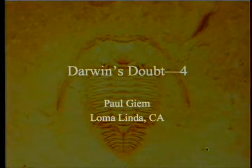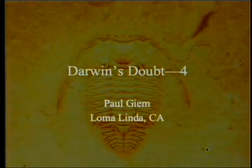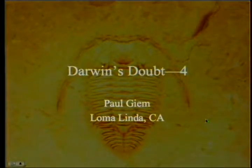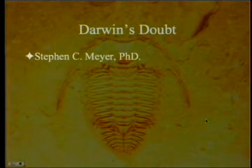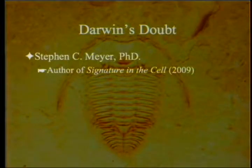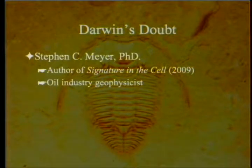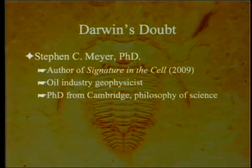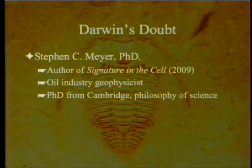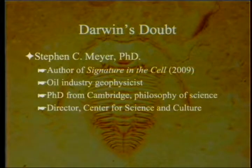Darwin's Doubt was written by Steve Meyer, author of Signature in the Cell. He was an oil industry geophysicist before he became interested in the science-religion aspect, then went and got his PhD in the philosophy of science from Cambridge, England. He is currently the director of the Center for Science and Culture at the Discovery Institute.